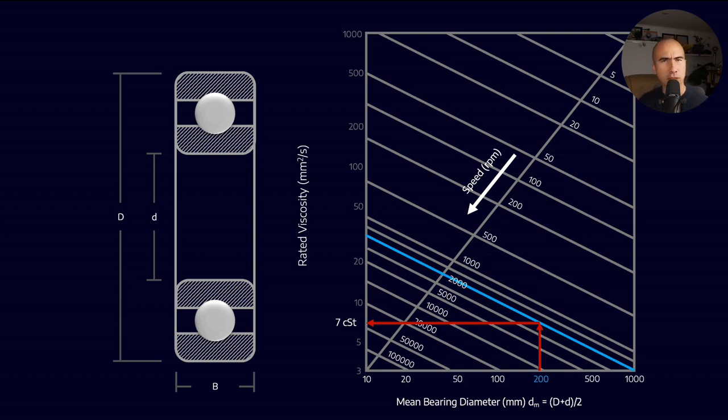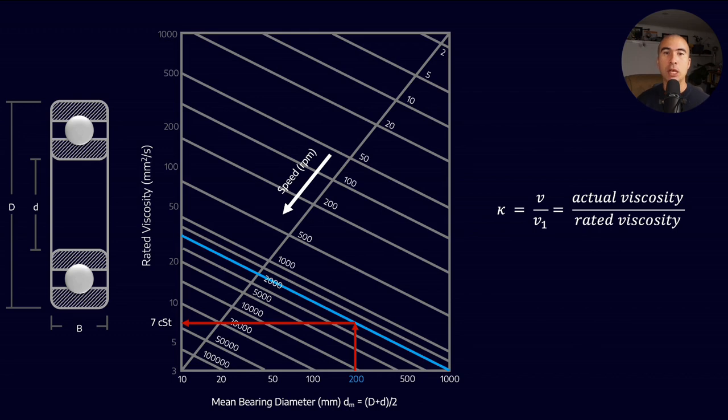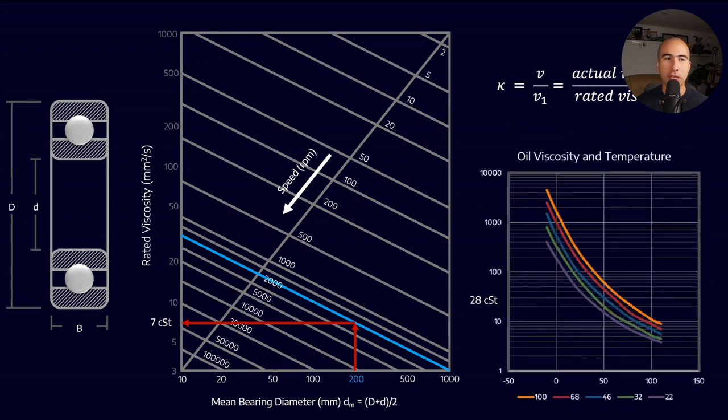Seven centistokes seems really low, but we need to apply the kappa ratio calculation. The kappa ratio defines the ratio between actual viscosity and rated viscosity. We look at actual viscosity in our application. If the bearing operates at 50 degrees Celsius with ISO 46 lubricant, that gives 28 centistokes actual viscosity at operating temperature. We take 28 divided by seven, giving a kappa ratio of four.